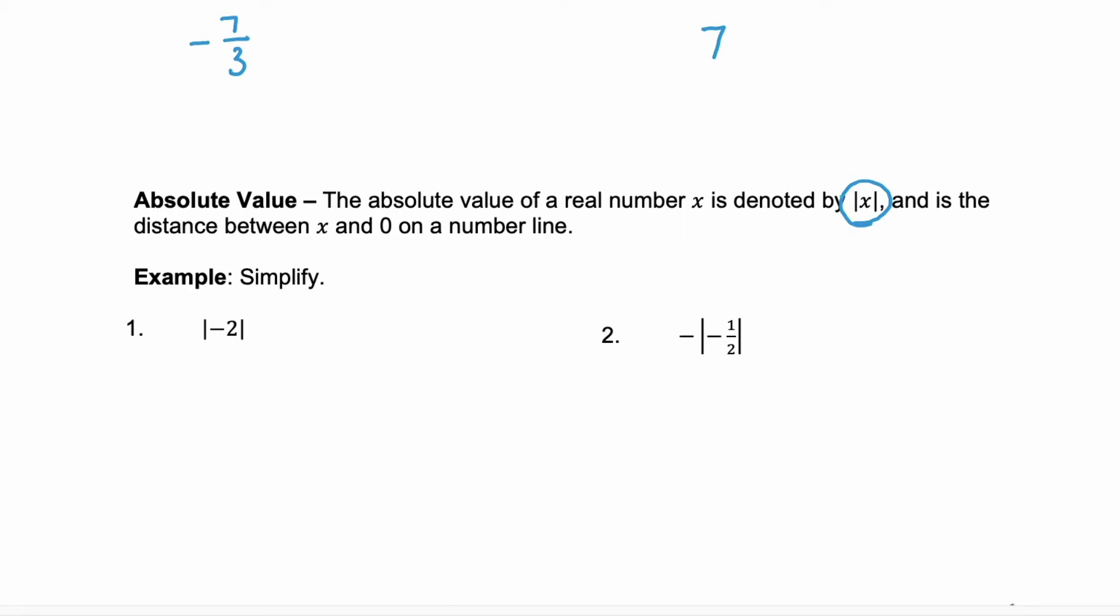Another way to think about absolute value is that it's a happy machine. Anything that is inside of that absolute value, inside those vertical bars, comes out positive. It's always positive. In example one we're taking the absolute value of negative 2. Negative 2 is inside of the absolute value. So it comes out positive or as 2.